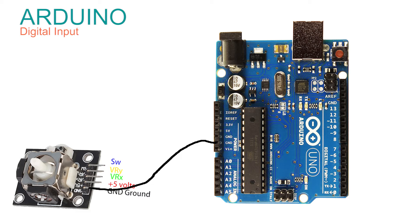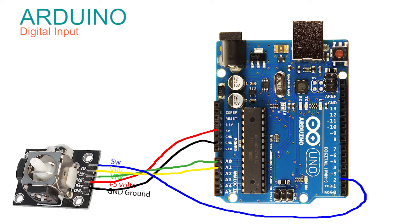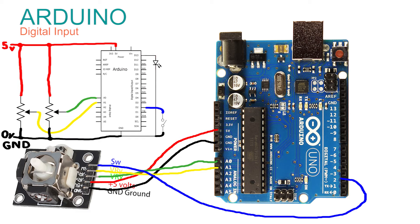Connect the black wire to either pin labeled GND. Our supply comes from 5V, so connect the red wire to the plus 5V. For the joystick analog output labeled VRX, use a green wire connected to pin A0. For the VRY pin, use a yellow wire connected to A1. The digital output from the switch labeled SW is connected to digital pin 2 using a blue wire.